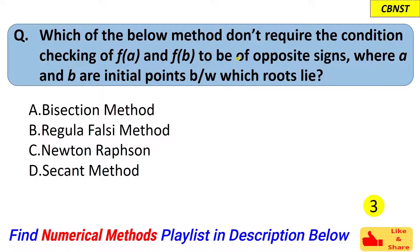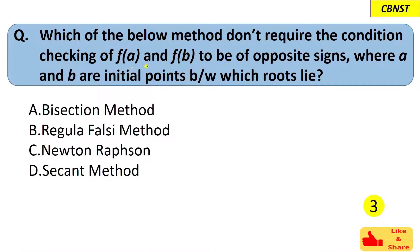We are asked which of these formulas does not need this condition. What is the condition? That f(a) and f(b) should be of opposite signs, where a and b are the initial points between which our roots lie. So which of these methods does not need this condition to be true?